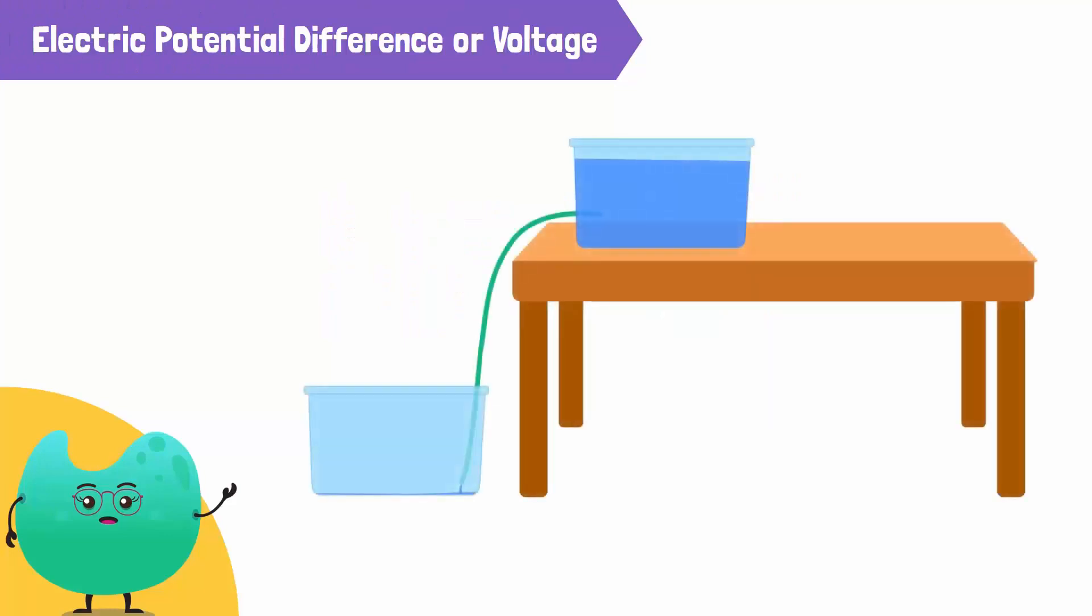The flow of electrons through a wire can be compared to the flow of water in a pipe. Consider two cans of water, one on the floor and the other on the table connected through a pipe. Which direction do you think the water will flow? Up or down? Because water in the higher can has more potential energy, water will flow from the higher can into the lower can.